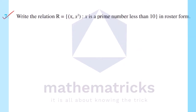Next, seventh question: write the relation R = {(x, x³)} such that x is a prime number less than 10, in roster form. This is the set builder formula; we need to convert to roster formula. The prime numbers less than 10 are 2, 3, 5, and 7.